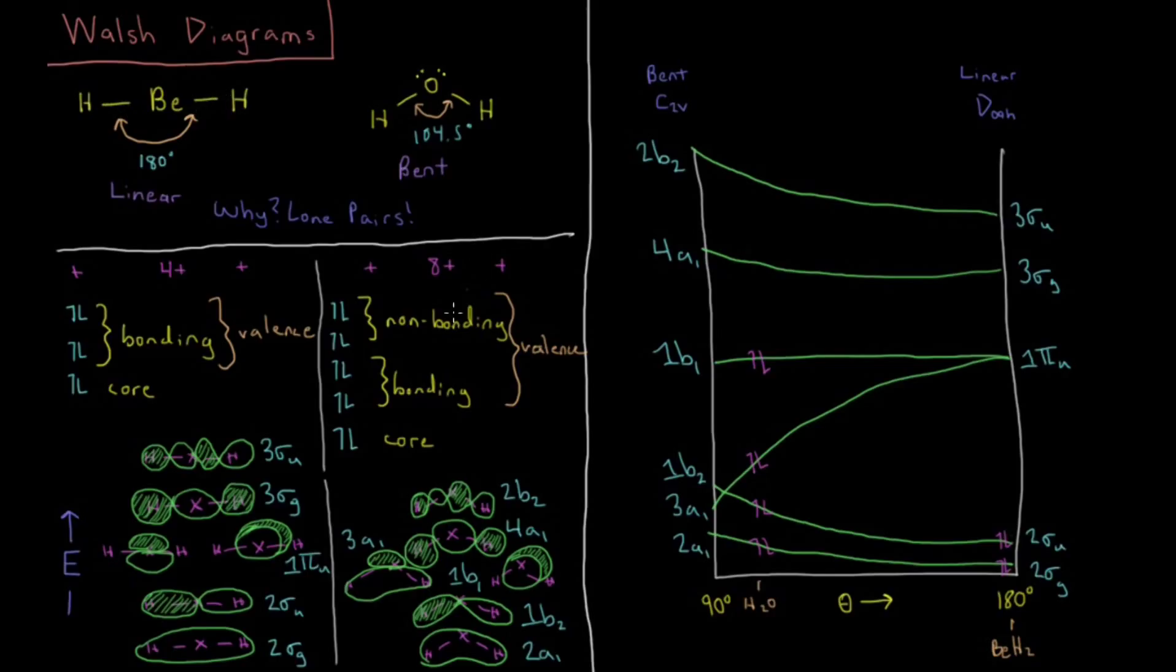For water, it's a similar situation for the first six electrons, but water being oxygen having eight plus and eight electrons instead of the four beryllium gives us two more sets of electrons. So these four electrons are also in the valence shell, but they are non-bonding and they form lone pairs.